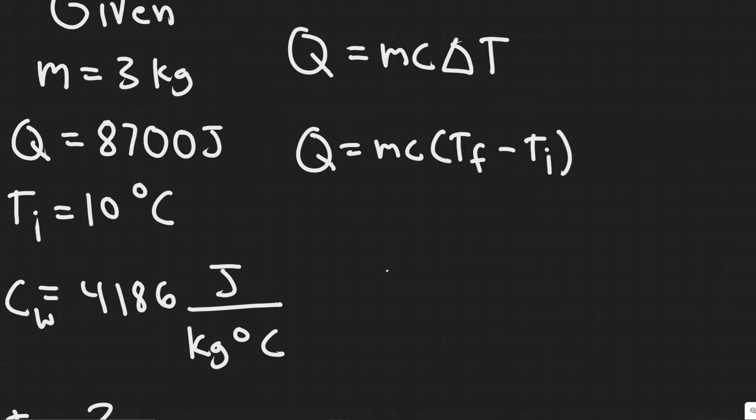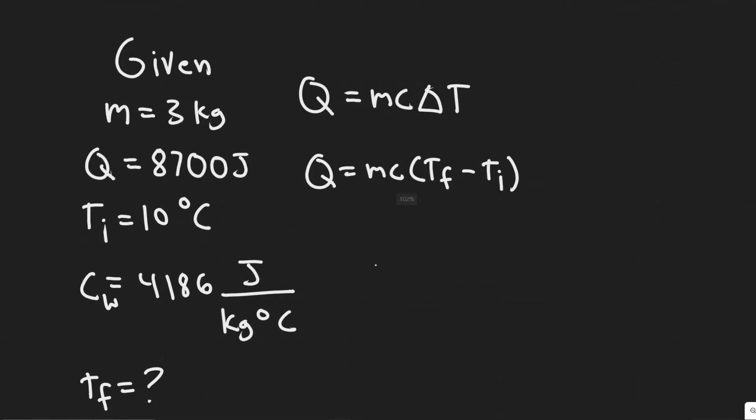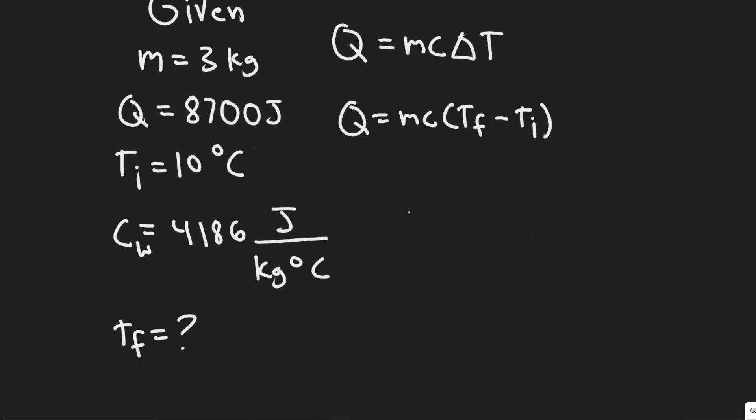And so basically, it's just as simple as plugging it in. We know how much energy is going to be added, so 8,700 joules of heat. We know the mass, and then we know the specific heat capacity of water, and we know the initial. So the only variable that would be left is your final temperature here. So it would just be a matter of solving it.